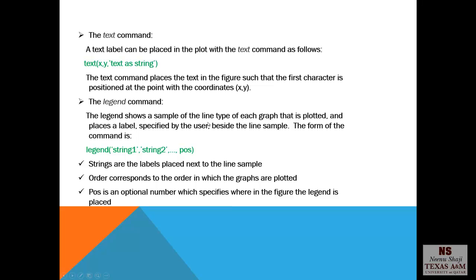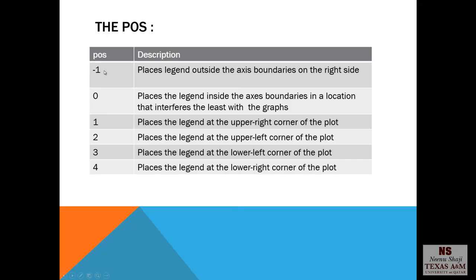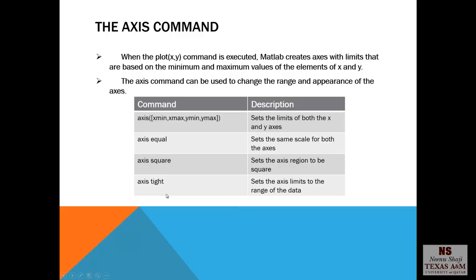Legend. Legend shows a sample of the line type of each graph that is plotted and places a label specified by the user beside the line sample. The form of the command is legend, then string 1, that is the name of the first plot you did, then string 2, string 3, etc. And then the position. Strings are the labels placed next to the line sample. Order corresponds to the order in which the graphs are plotted. And POS is an optional number which specifies where in the figure the legend is placed. These are the different numbers you can use for the POS commands and the meaning for each of one. Zero. If you type zero, it places the legend inside the axis boundaries in a location that interferes the least with the graphs.